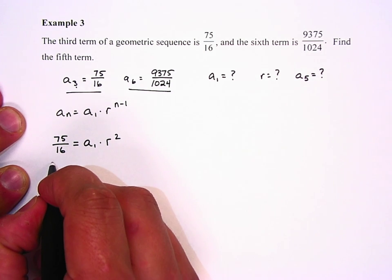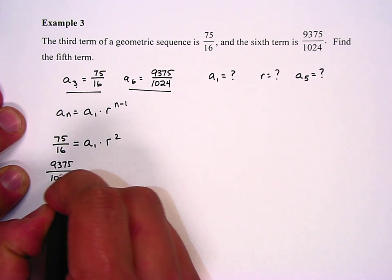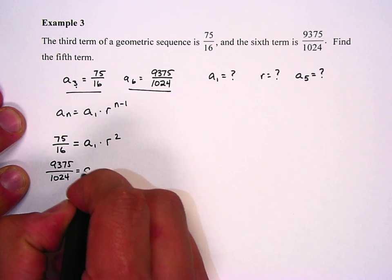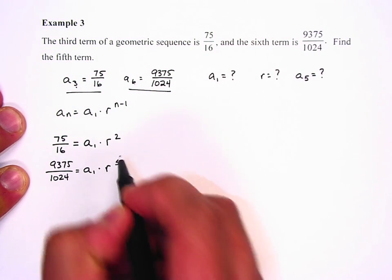We also know the sixth term, which is 9375 over 1024. We don't know a sub 1. We don't know r, but since n is 6, we know that's 5.